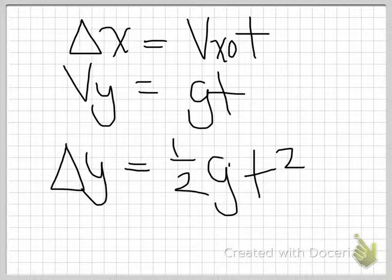So here are three equations used to solve projectile motion problems. The first one describes the displacement in the horizontal direction, the second one describes the velocity in the vertical direction, and the third one describes the displacement in the vertical direction.